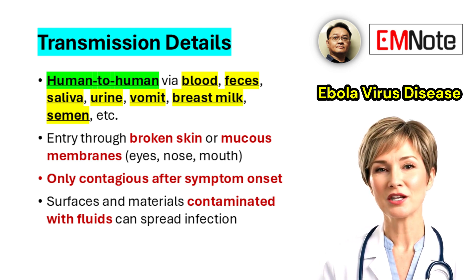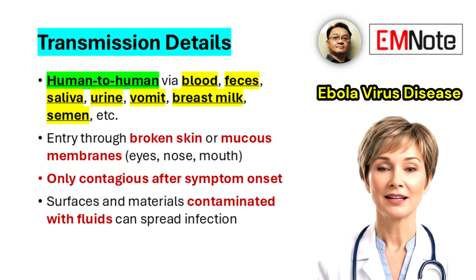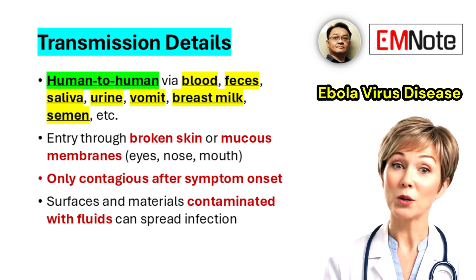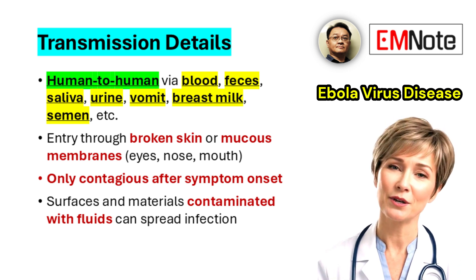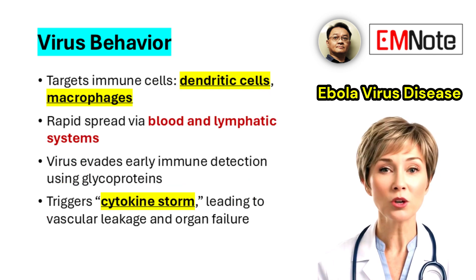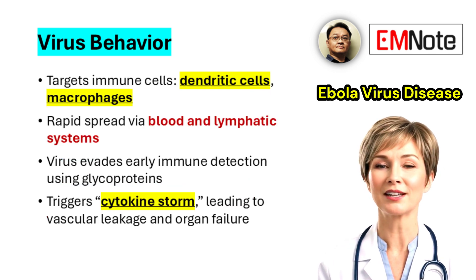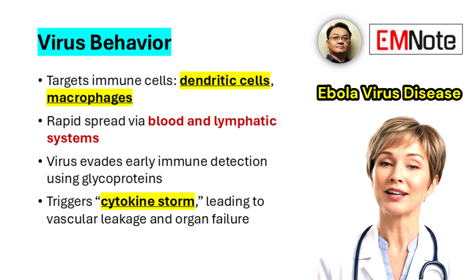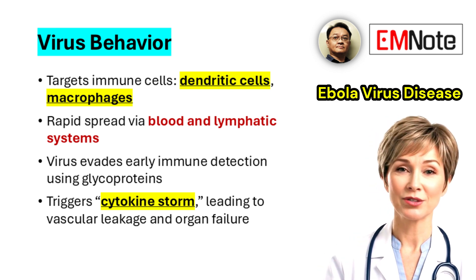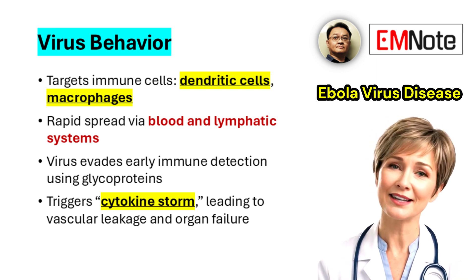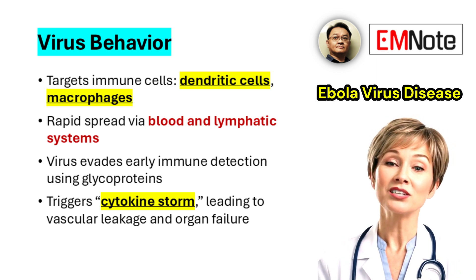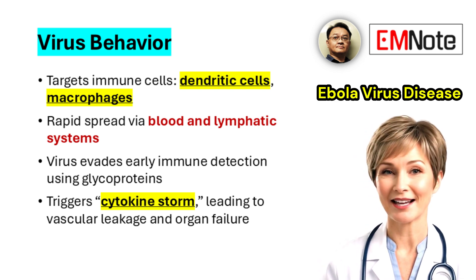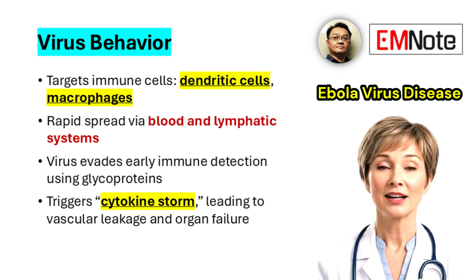Transmission requires entry through broken skin or mucous membranes. Importantly, individuals become infectious only once they develop symptoms. Upon entering the body, the Ebola virus targets antigen-presenting cells such as dendritic cells and macrophages. The virus replicates locally and then spreads to regional lymph nodes, the bloodstream, and the lymphatic system.